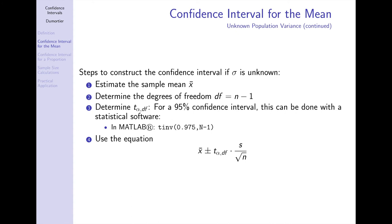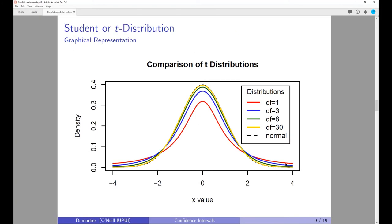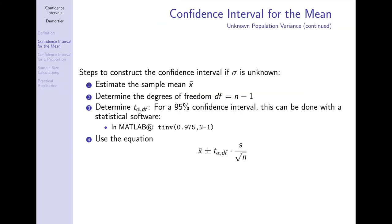The steps to construct the confidence interval for the mean when the population standard deviation is unknown are: estimate the sample mean x-bar, determine the degrees of freedom as n minus 1 (e.g., for n=36, df=35), and look up the t-value. As the sample size gets very small, you have more area in the tails, and the t-value used to construct the confidence interval expands.